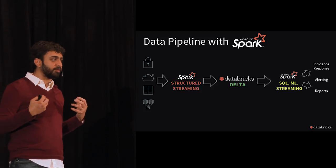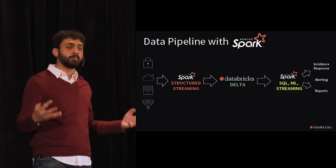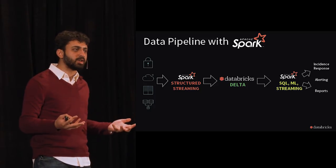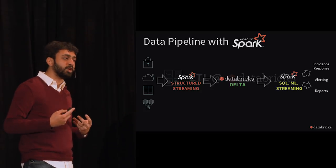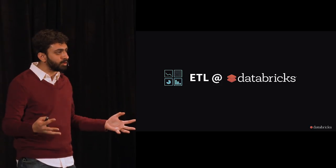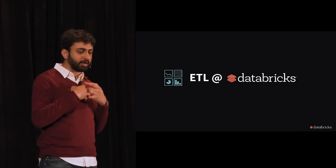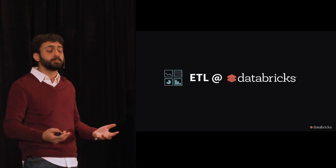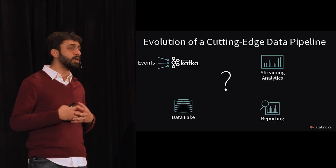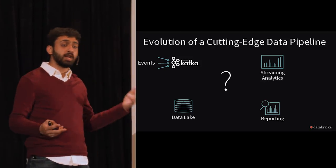Going back to the original picture of how we build the new data pipeline using Apache Spark — the second part was Databricks Delta. Let me use our own example of how we do ETL at Databricks to explain the problems we faced using Structured Streaming alone, and how we came up with Databricks Delta. We had data events coming in from Kafka — user logs from our managed cloud service running on AWS, Azure, and different locations — coming in through Kinesis and Kafka.